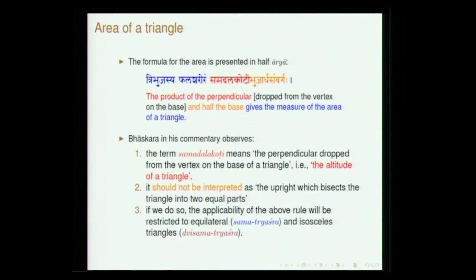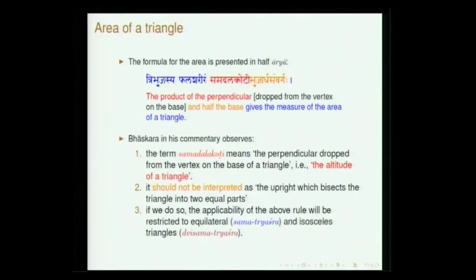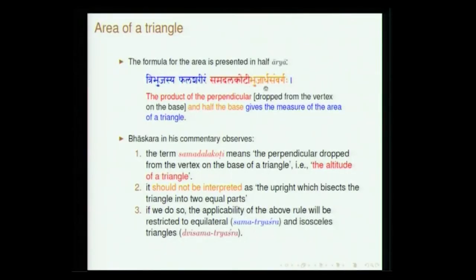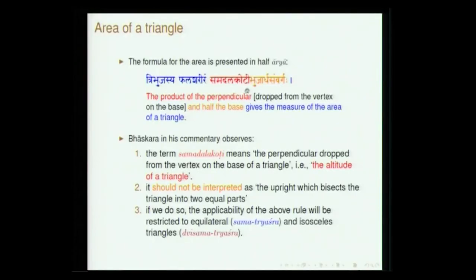Let us start with the verse which presents the formula for the area of a triangle. Aryabhata says: 'tribhujasya phala shariram samadala koti bhujardhasam vargaha.' Normally we say half times base times height — essentially the same expression. Tribhuja is triangle, phalam is the word employed to refer to area, shariram should be understood as pramana (the measure of the area). Ardha is half and samvargaha is product.